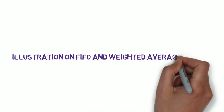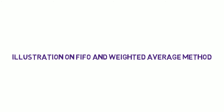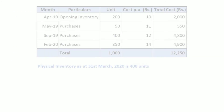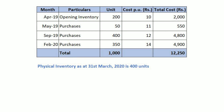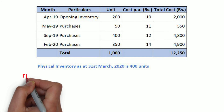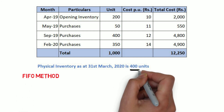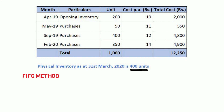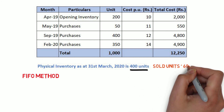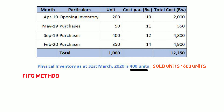The last illustration is on the FIFO and weighted average methods. Here is an inventory schedule; at the end of the year the physical inventory is 400 units. Let's calculate the closing stock using the first-in first-out method and the weighted average cost method. Under FIFO, the closing inventory is 400 units. Deducting this from total units available — 1,000 units — gives us 600 units sold during the year.